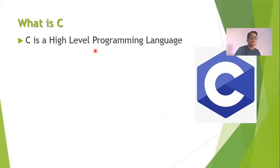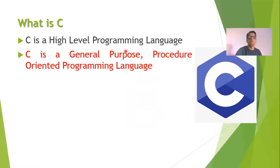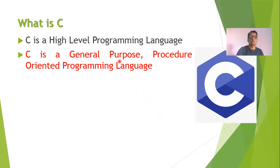Low level language is not a convenient way to communicate with the computer system. Therefore, high level languages — languages which are similar to English — were developed. C language is one such high level language through which you can communicate with a computer system.